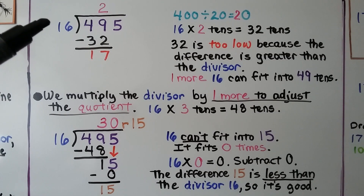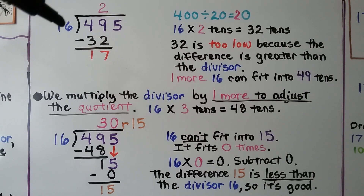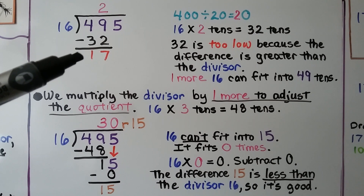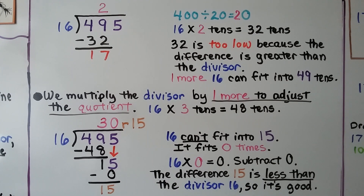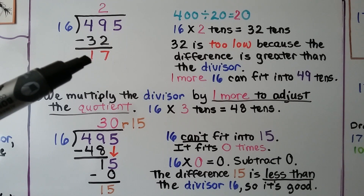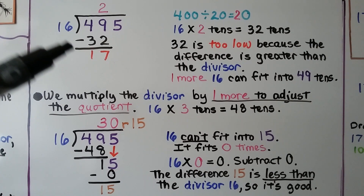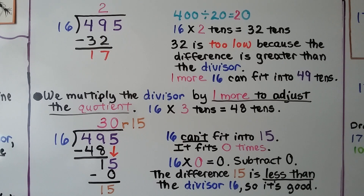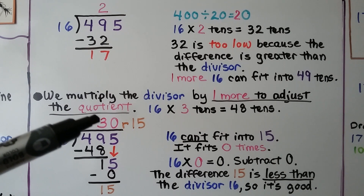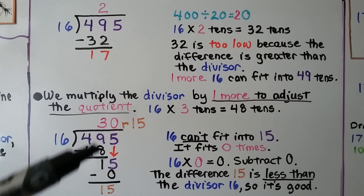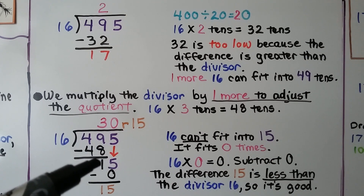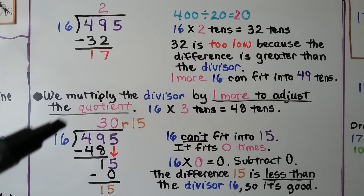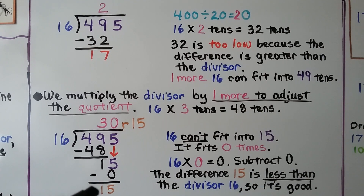Here we have 495 divided by 16. We estimate 400 divided by 20 is 20, so two tens. We try putting a 2 here — 16 times 2 is 32 — but when we subtract we get 17 tens, and 32 is too low because the difference is greater than the divisor. So we multiply the divisor by one more to adjust: we try 16 times 3, which is 48. That's a good number to subtract — we get a 1. The 5 drops down, giving us 15. But 16 cannot fit into 15, so we put a 0 in the ones place. 16 times 0 is 0; we subtract and get a remainder of 15, which is less than the divisor 16, so it's good.